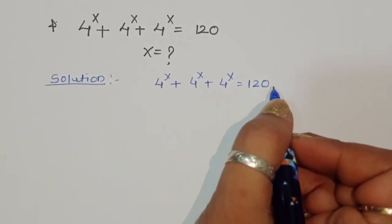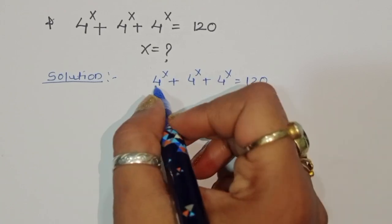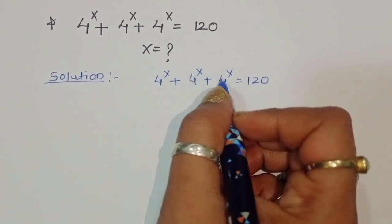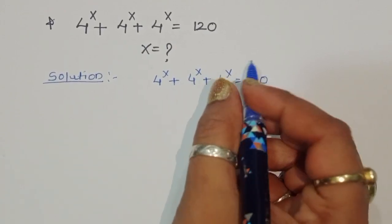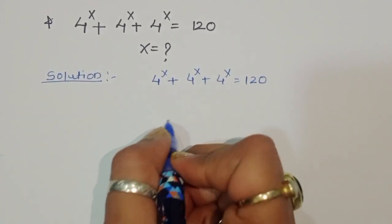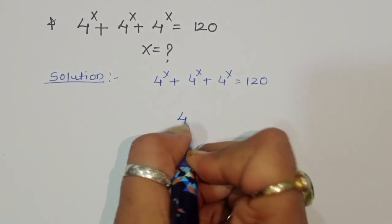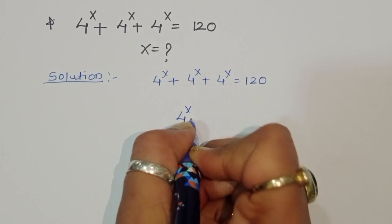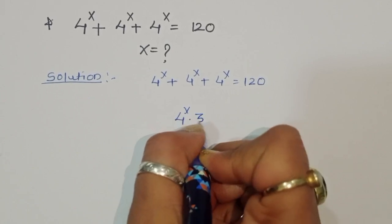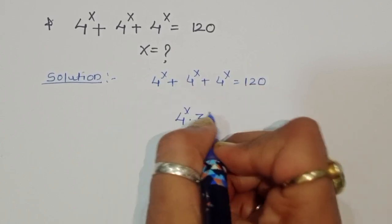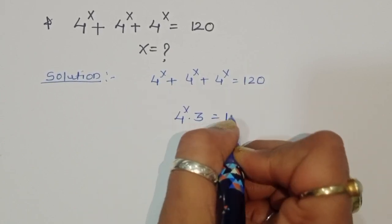We can do one thing here — since we have 4 power x plus 4 power x plus 4 power x, we can write this as 4 power x times 3. So 3 times 4 power x is equal to 120.